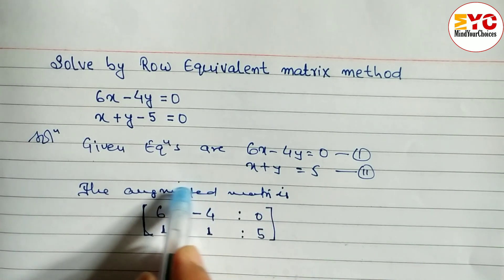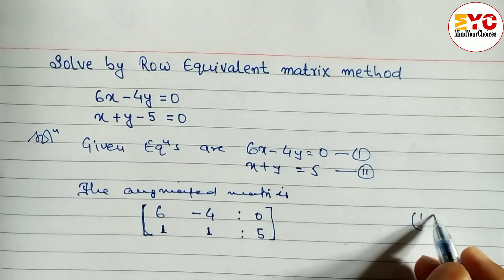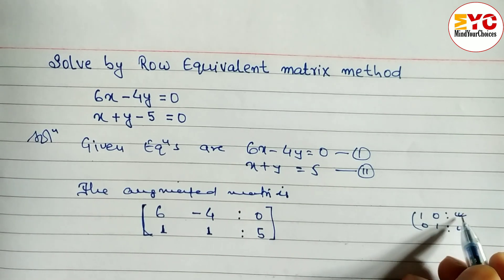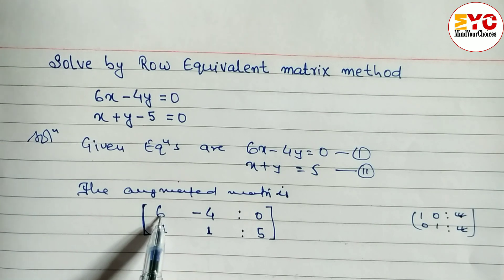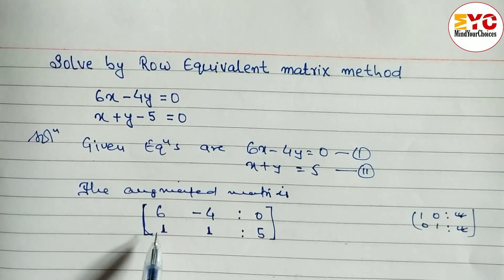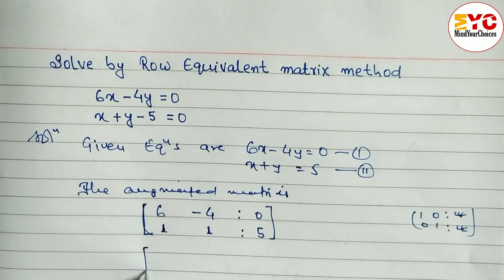Our first aim is to convert this augmented matrix into the form [1, 0; 0, 1] — the identity matrix form — where the constant column will give us the values of x and y. To get a 1 in the first position, since we already have a 1 in row two, we can interchange rows R1 and R2.